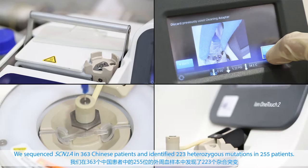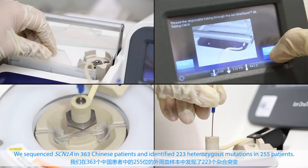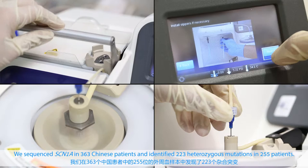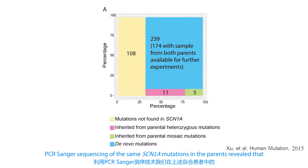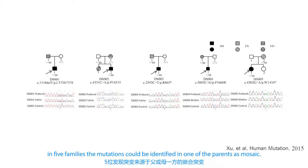We sequenced SCN1A in 363 patients and identified 223 heterozygous mutations in 255 patients. PCR Sanger sequencing of the same SCN1A mutations in the parents revealed that in five families, the mutations could be identified in one of the parents as mosaic.